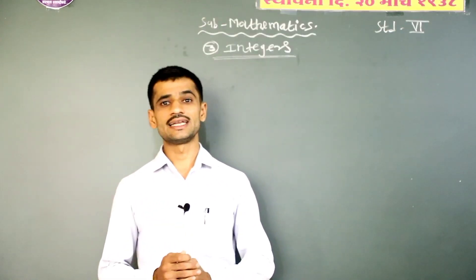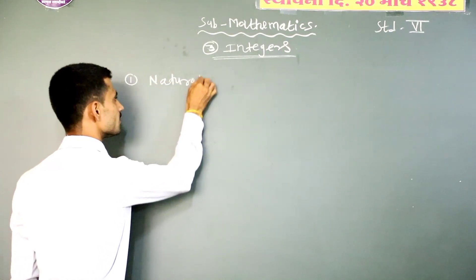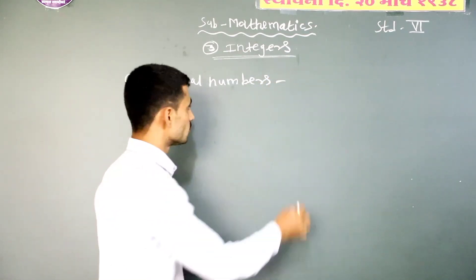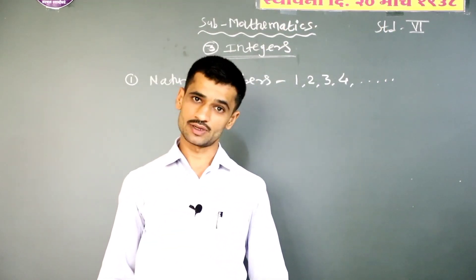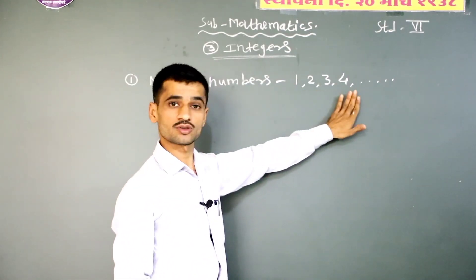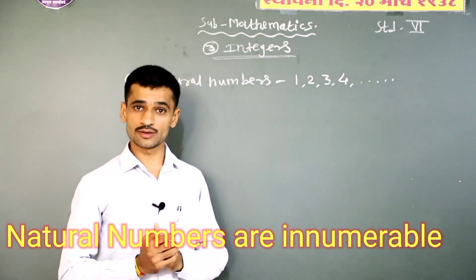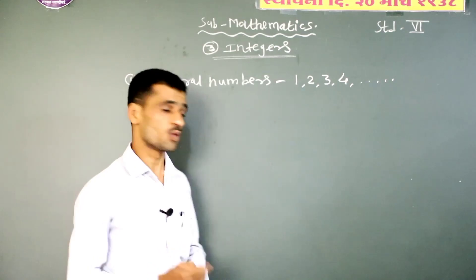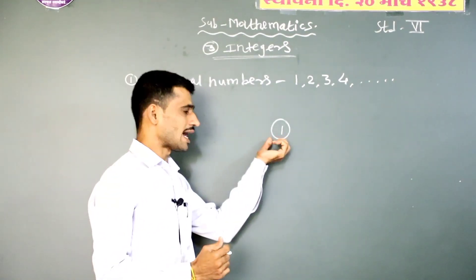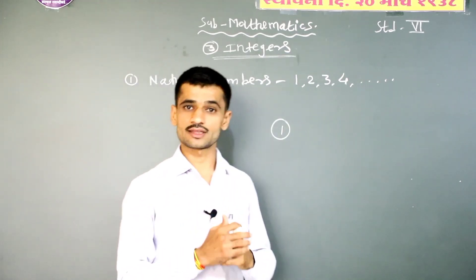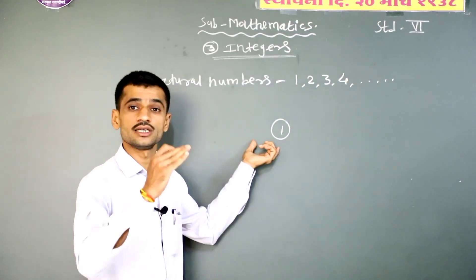The types of numbers. First, natural numbers. The numbers 1, 2, 3, 4 and so on are called natural numbers. They are also known as counting numbers. Natural numbers are innumerable. So, which is the smallest natural number? 1 is the smallest natural number. And which is the biggest natural number? It cannot be told, because natural numbers are innumerable.